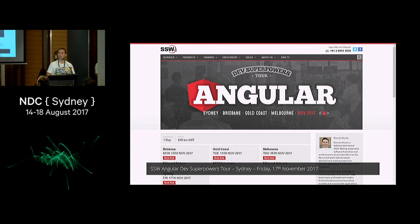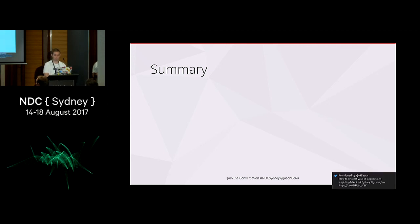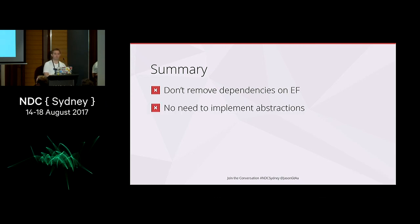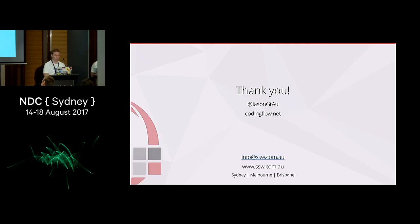You might also like to check out the Angular Superpowers in the Enterprise tour — we'll show you everything you need to get up and running with Angular in the enterprise, running on Friday the 17th of November. In summary, I've shown you everything you need to implement simplified unit testing for systems that depend on Entity Framework Core using the in-memory provider. You don't need to remove your dependencies on EF Core — you can use the DB context directly, you don't need abstractions or test doubles, and you can focus on just one thing: writing unit tests. Thank you.